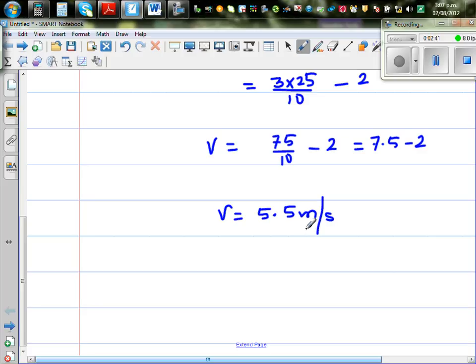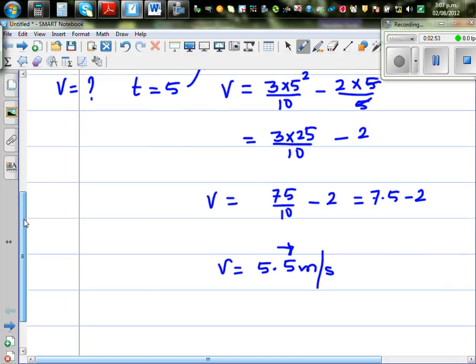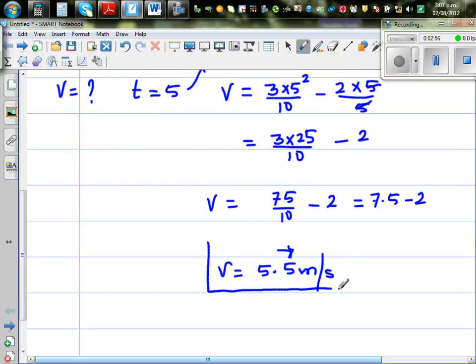It is going to the right. You can show the direction—it's not necessary. This means it is going forward. After 5 seconds or at the end of 5 seconds, it has a velocity of 5.5 meters per second.